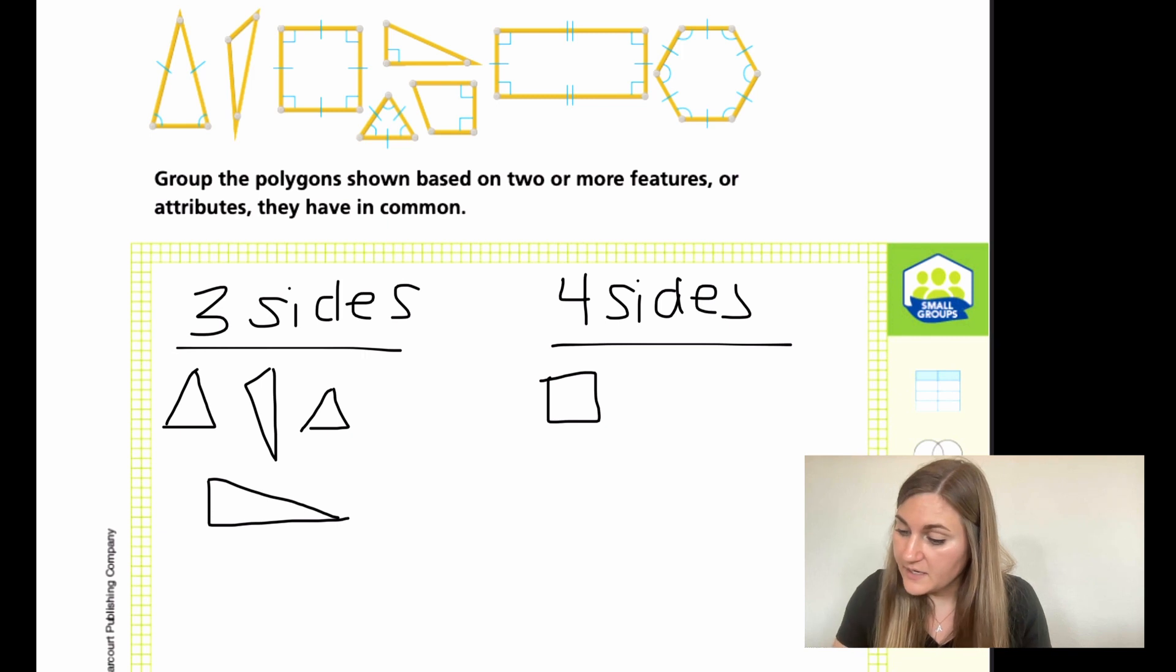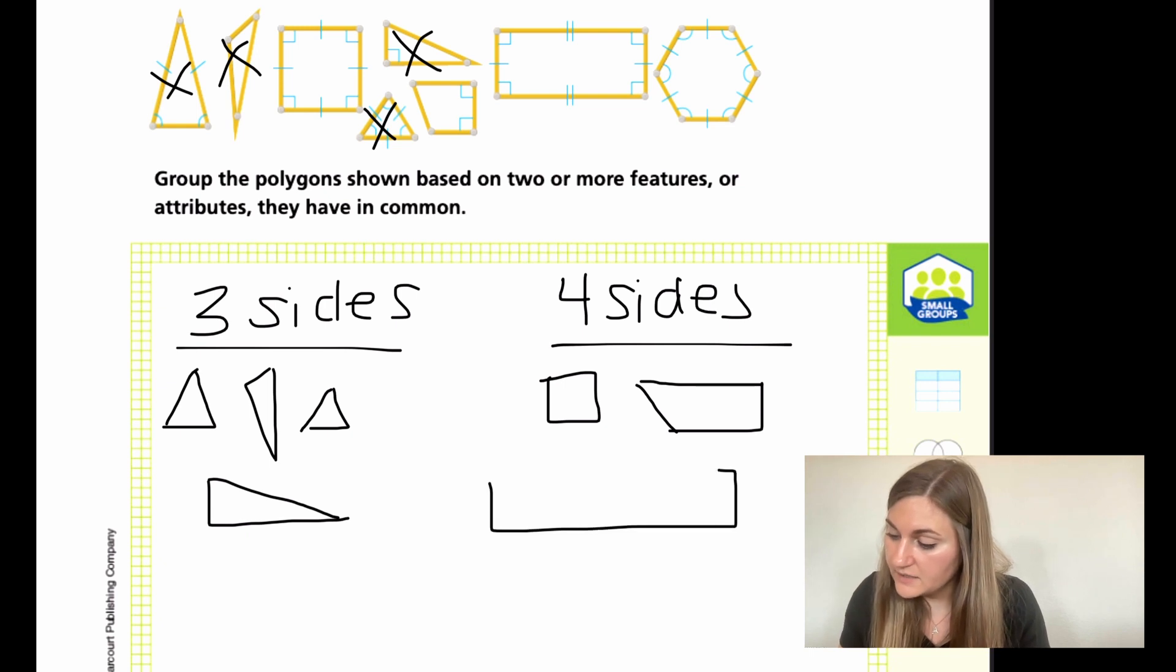All right. Then I have my rectangles. I have my square. Just keep track. Then I have this quadrilateral. Then I have my rectangle.